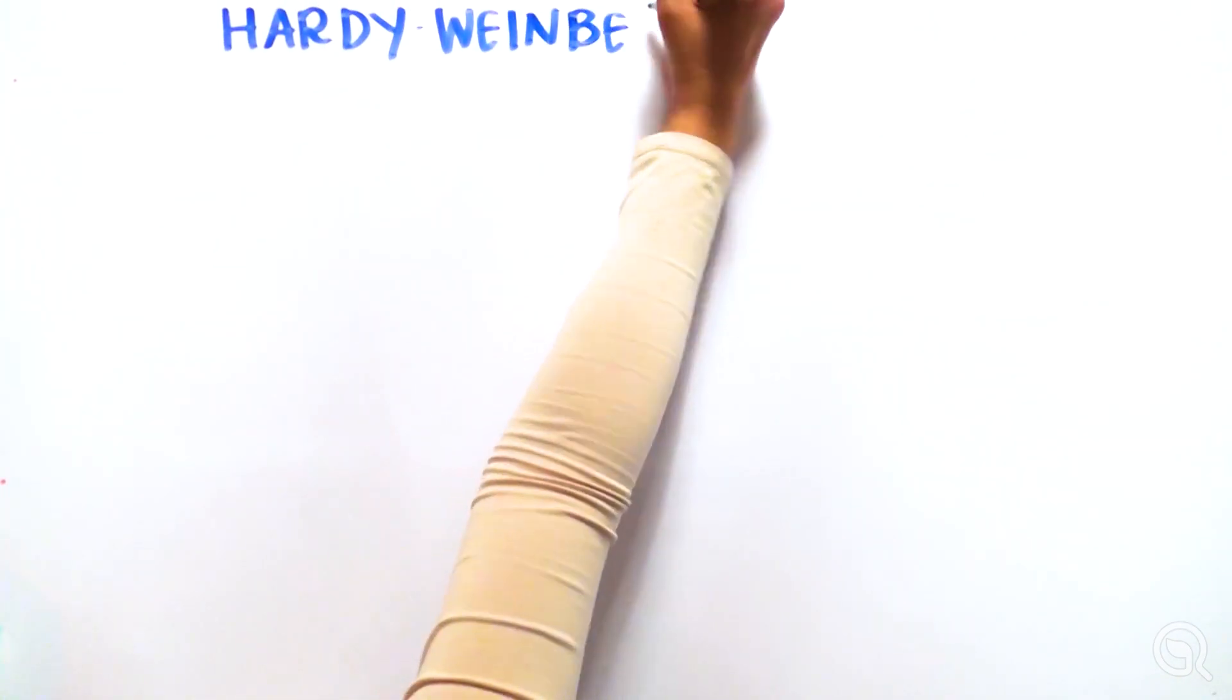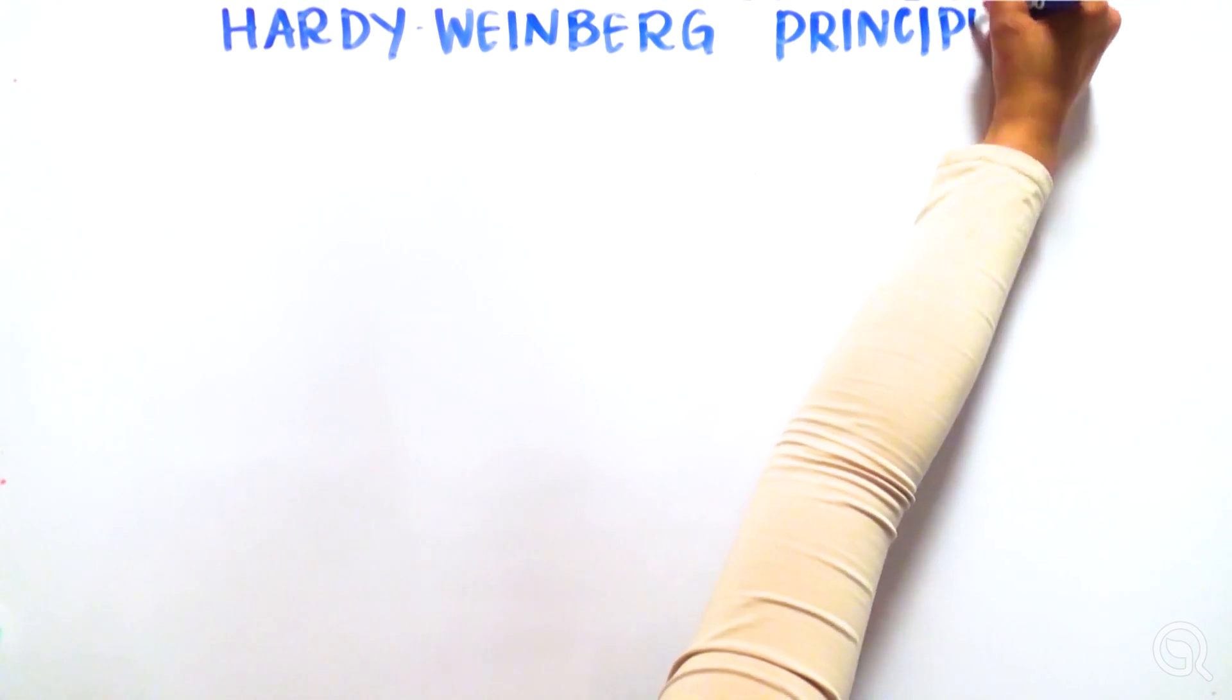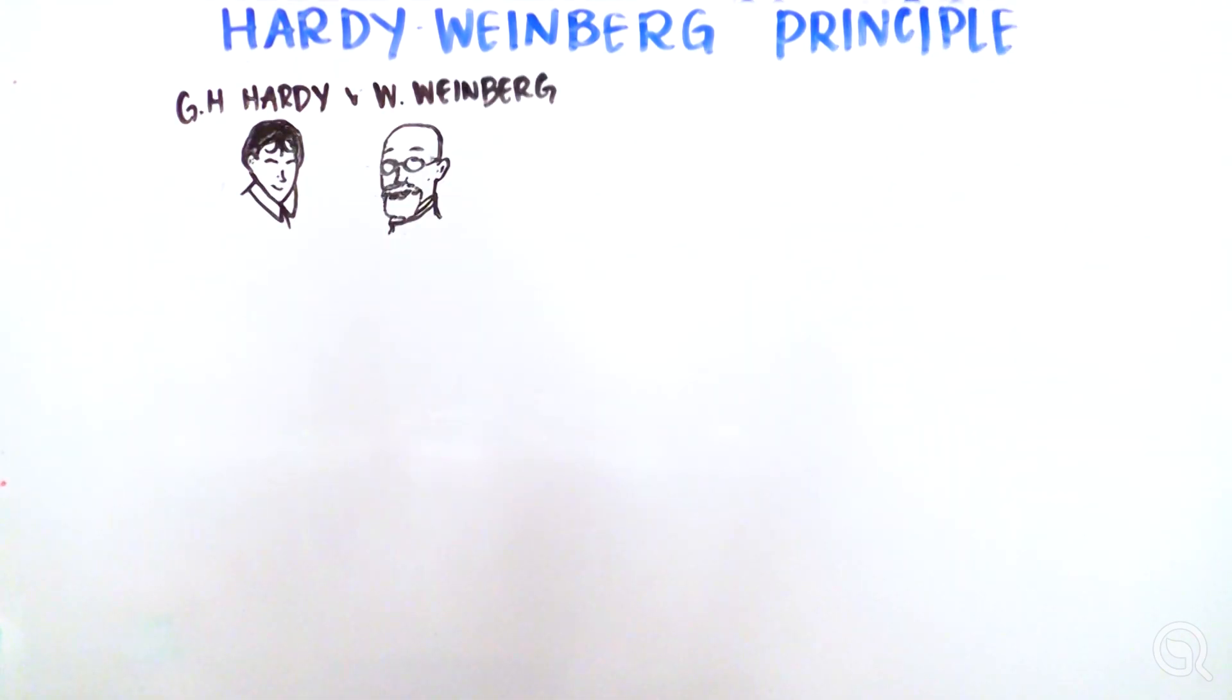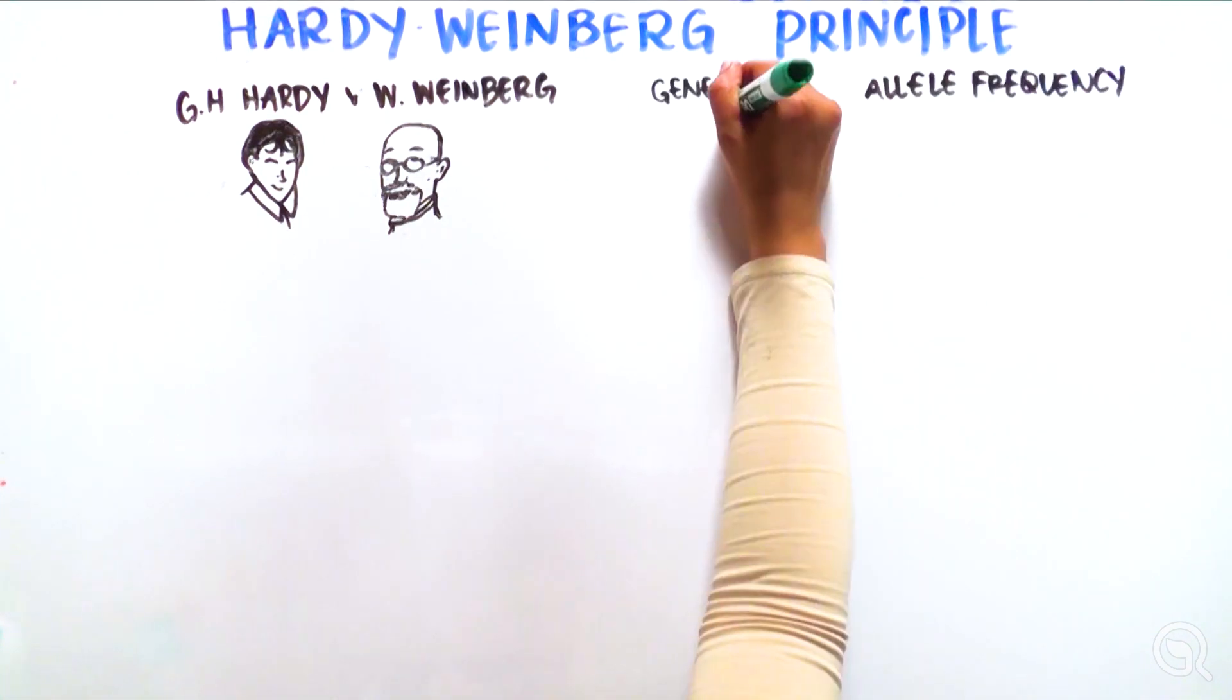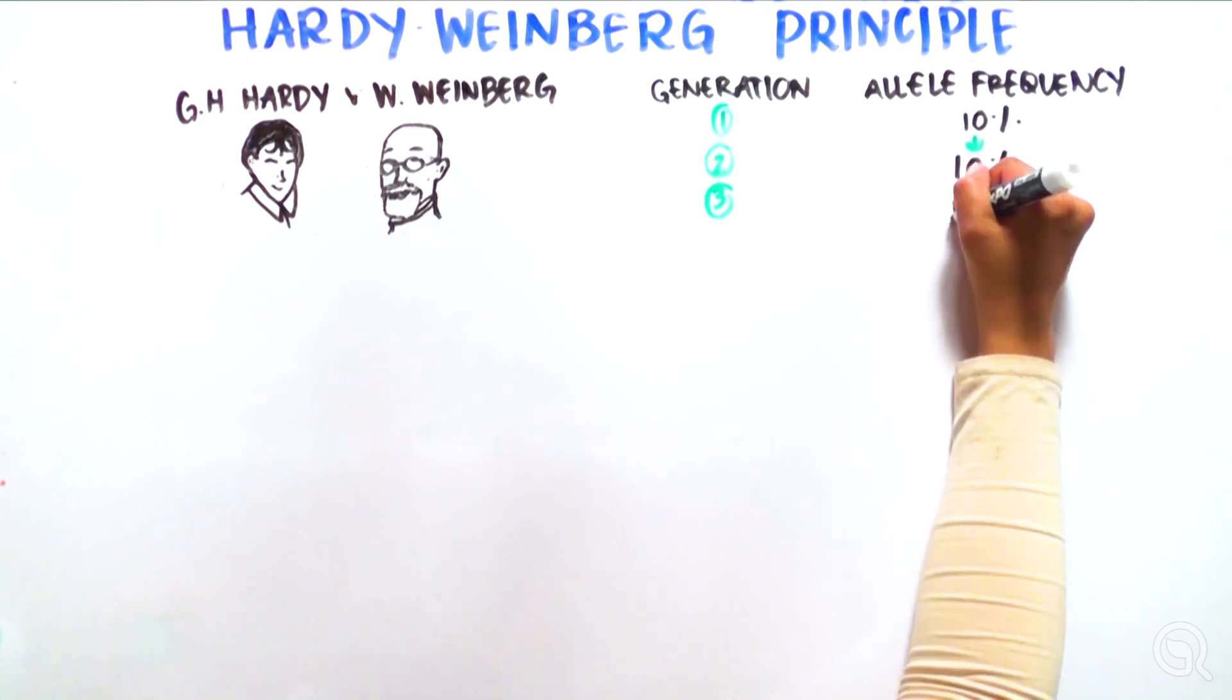The Hardy-Weinberg Principle, named for two scientists G.H. Hardy and W. Weinberg, states that the frequency of alleles in a population will remain constant from generation to generation unless there are changes in the population.